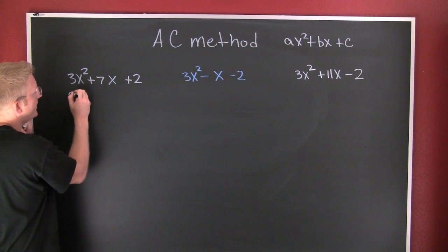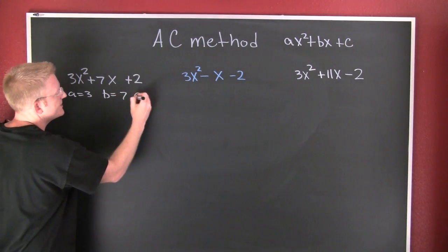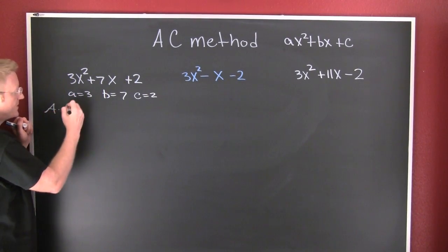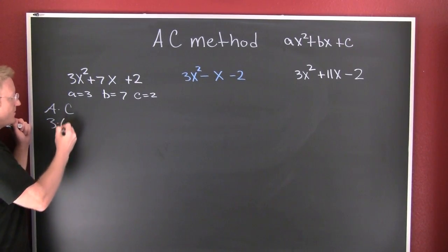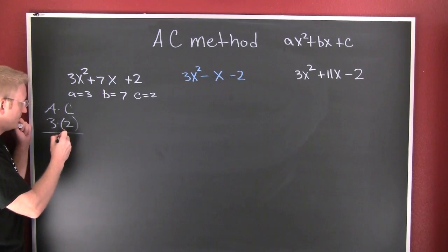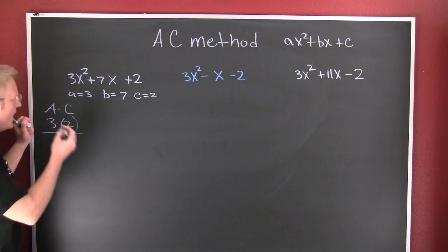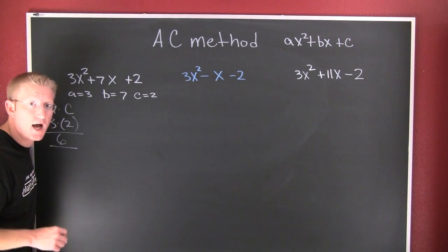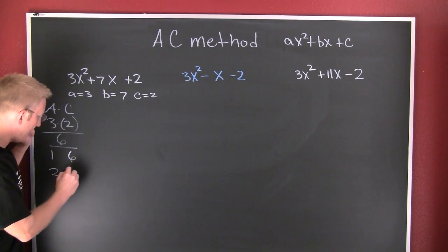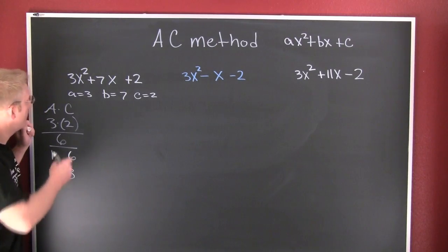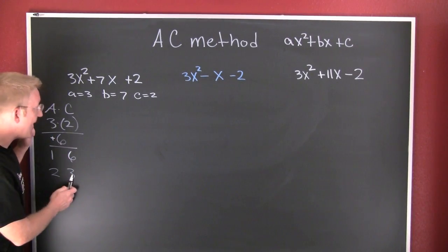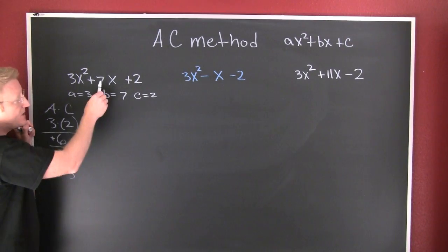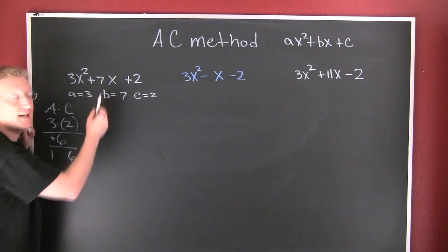Here my A is 3, my B is 7, and my C is 2. Now I want to take the product of A and C, so A times C is going to be 3 times 2, and that's 6. Now I need to find the factors of 6 — break it down. Factor time: 1 and 6, and 2 and 3. My product is positive, so I know these need to add to be 7, which is my middle coefficient. It appears that 1 and 6 add to be 7.